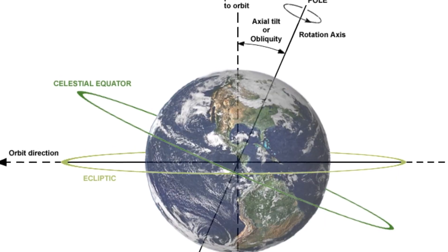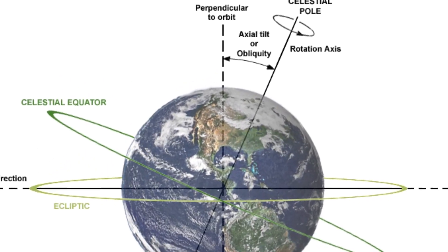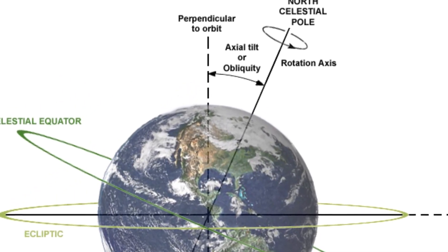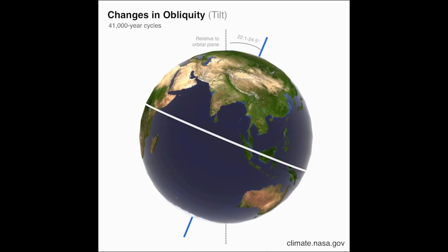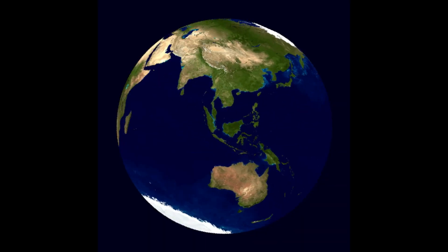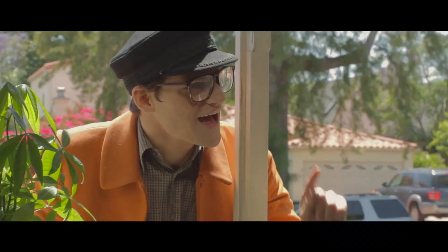The next important characteristic about Earth's orbit around the sun is its axial tilt. Earth's axial tilt is at about 23.44 degrees. And believe it or not, if it weren't for this axial tilt, we would not have seasons as we know them. When we talk about the seasons, a lot of people think that the seasons are created because the Earth is closer to the sun at certain times of the year, when in reality, that has nothing to do with it.